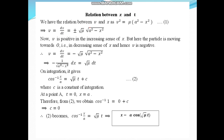We have the relation between v and x: v² = μ(A² − x²). Therefore dx/dt = ±√(μ(A² − x²)). Since v is positive in the increasing sense of x, but here the particle is moving towards O, that is in the decreasing sense of x, we take v as negative: dx/dt = −√(μ(A² − x²)).